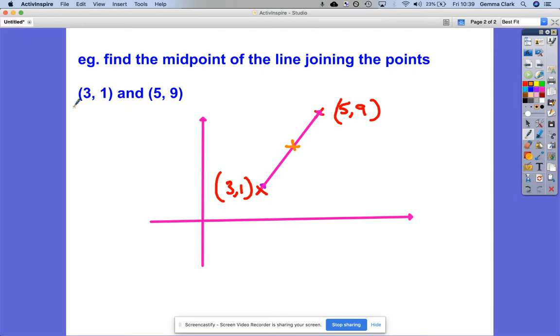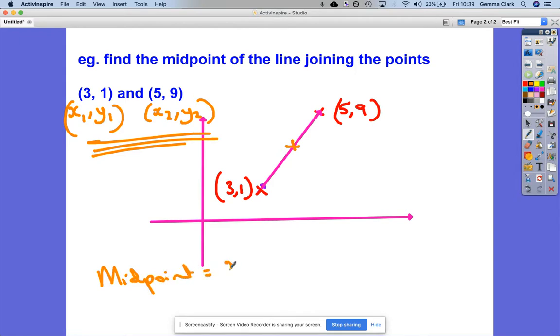First of all, we've got this one, which is x1, y1, and secondly, we've got this one, which is the second round of x, y coordinates. So the midpoint here, we follow, it's going to be x1 plus x2 divided by 2, and y1 plus y2 divided by 2. Let's put those values in.